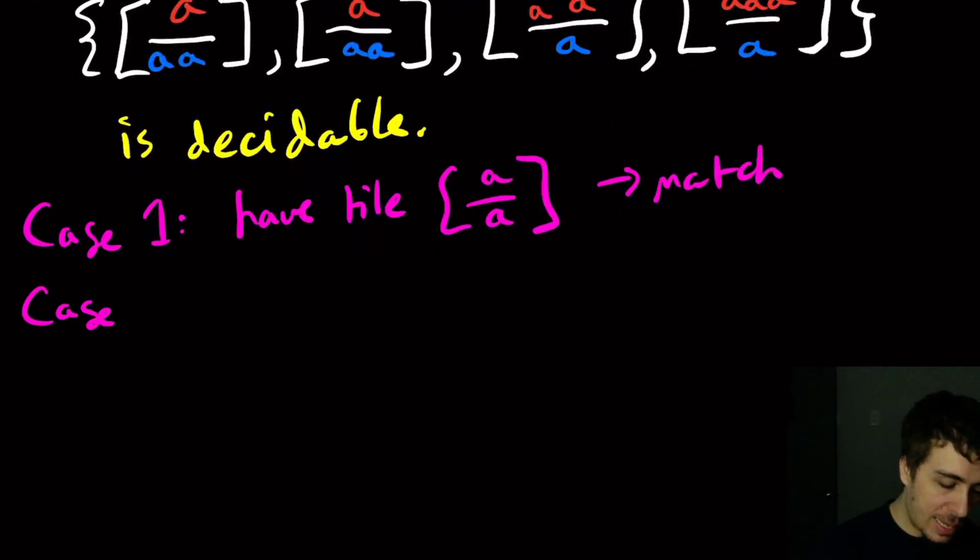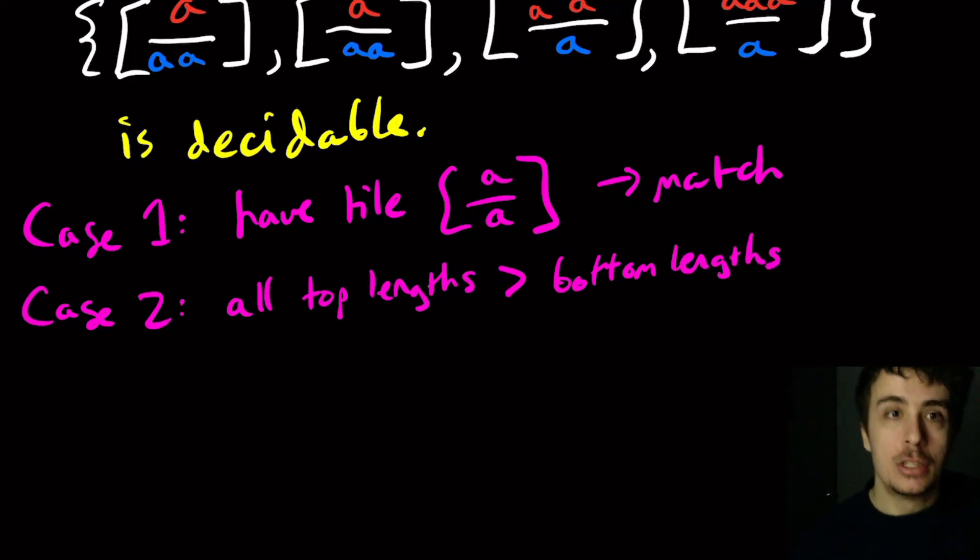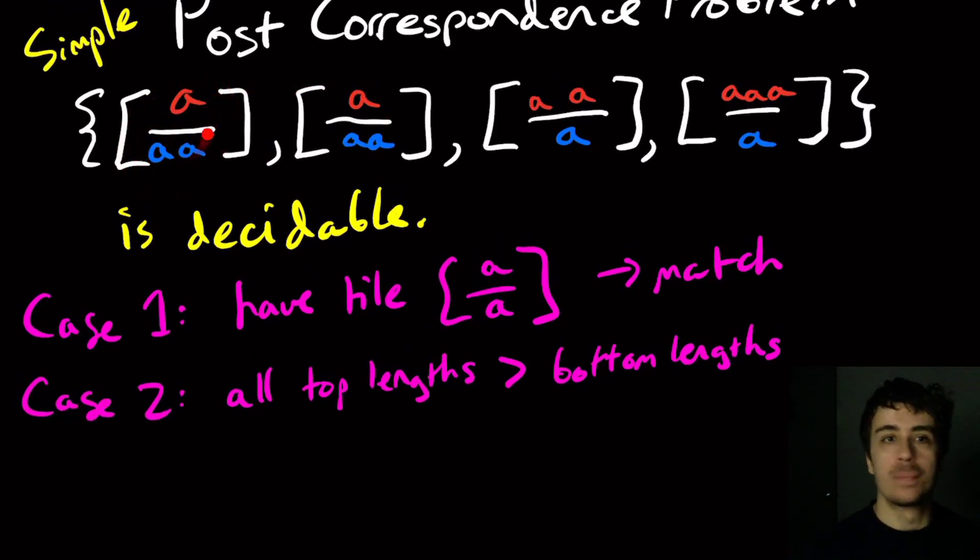What about case two, where all the top lengths are bigger than the bottom lengths? So what if we had just this tile only. If I try to pick it, it's going to be longer on the bottom than the top. Actually, in this case, it should be this tile. My mistake.